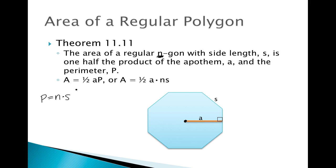So we have two different formulas: area equals one-half the apothem times the perimeter, or we can substitute in the formula for perimeter and say area equals one-half the apothem times the number of sides times the length of that side. That formula works for any type of regular polygon.